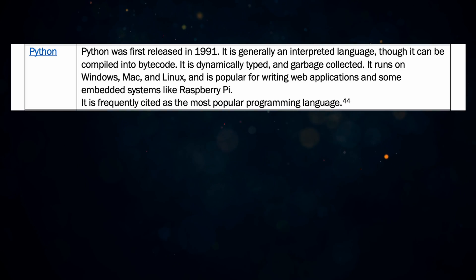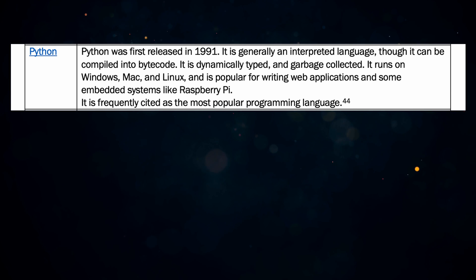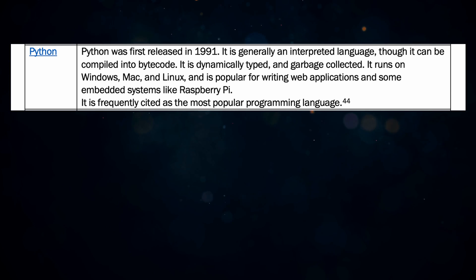Number four is Python, another great language to learn. Python was released in 1991 as generally an interpreted language, though it can be compiled into bytecode. It's dynamically typed and garbage collected, and it's frequently cited as the most popular programming language. It has to be noted that many of Python's packages run C or C++ under the hood, which could introduce some issues, but they address that in the paper and seem okay with it.